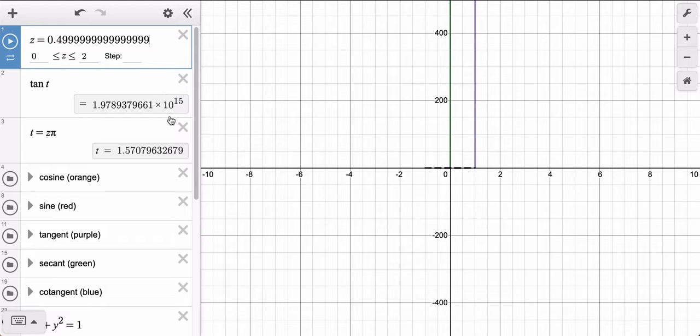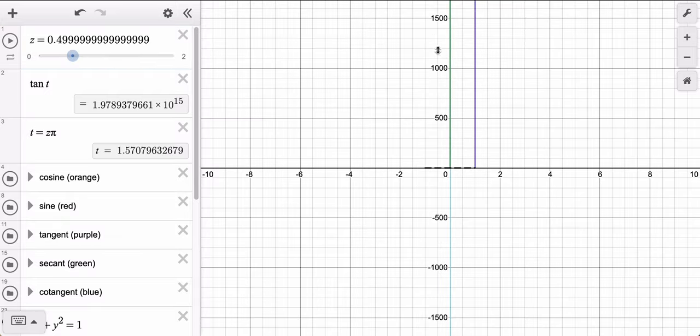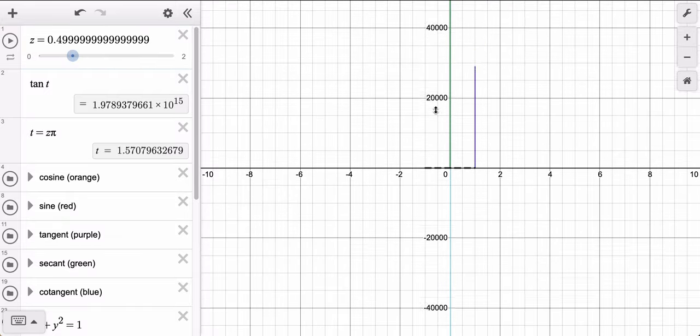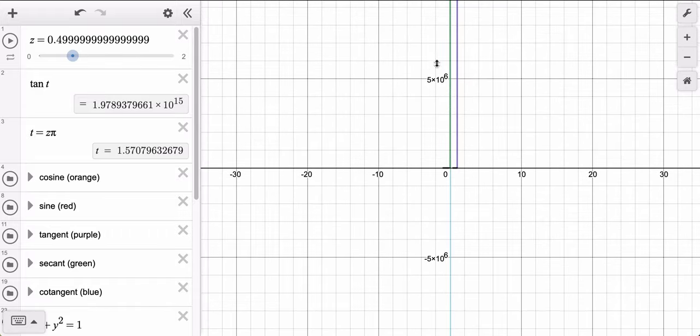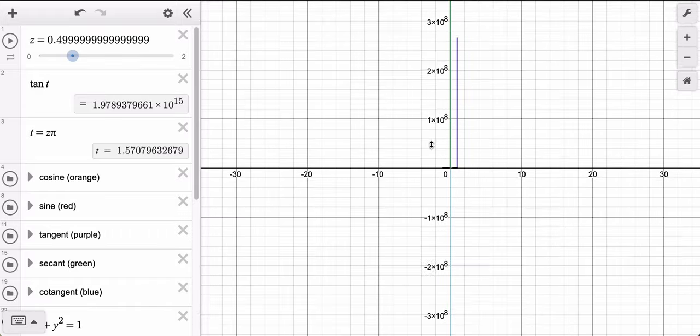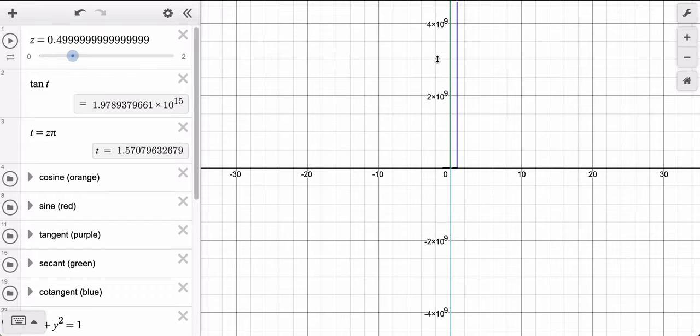Now, 10 to the 12th is trillion, so this is quadrillion. That's right. The tangent, when you're this close to one half a pi, has reached the quadrillions, right? Trillions is 10 to the 12th, so quadrillions. I've got to see if Desmos can show it. I think it can. Isn't this amazing? Our computer's amazing. Isn't math amazing?